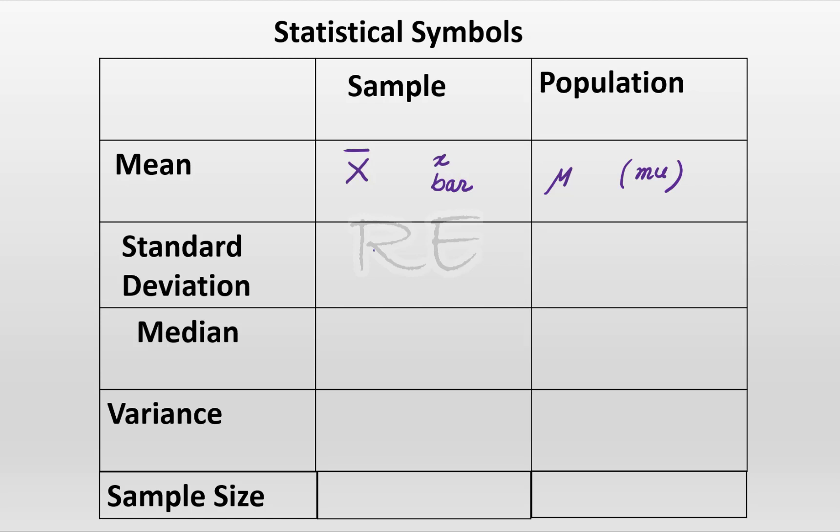For the sample, the standard deviation is a capital S, the capital letter S. Standard deviation for the population is sigma, lowercase sigma. This symbol represents the lowercase sigma.